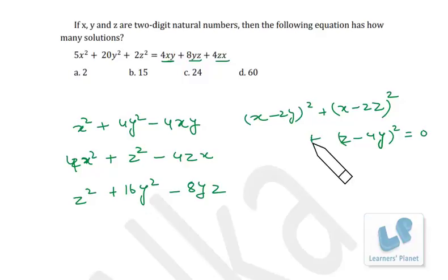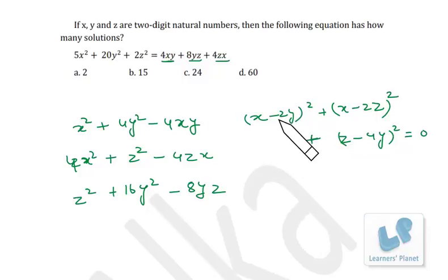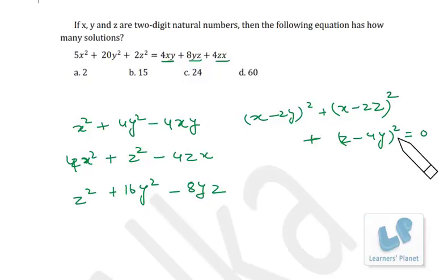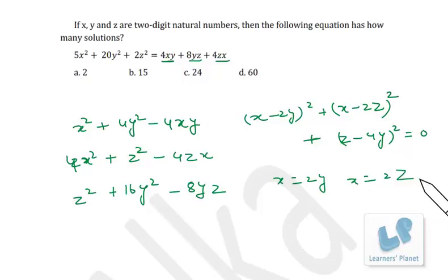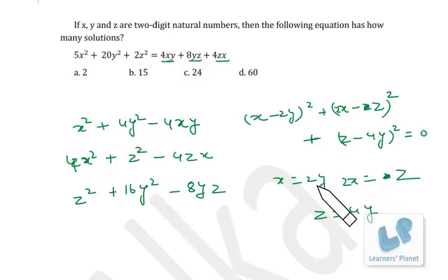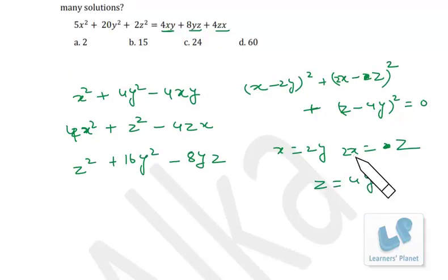The entire expression can be written as (X − 2Y)² + (X − 2Z)² + (Z − 4Y)² = 0, since all terms have been moved to the left-hand side. A sum of squares equals zero only when each square is zero, giving the conditions: X = 2Y, 2X = Z, and Z = 4Y.